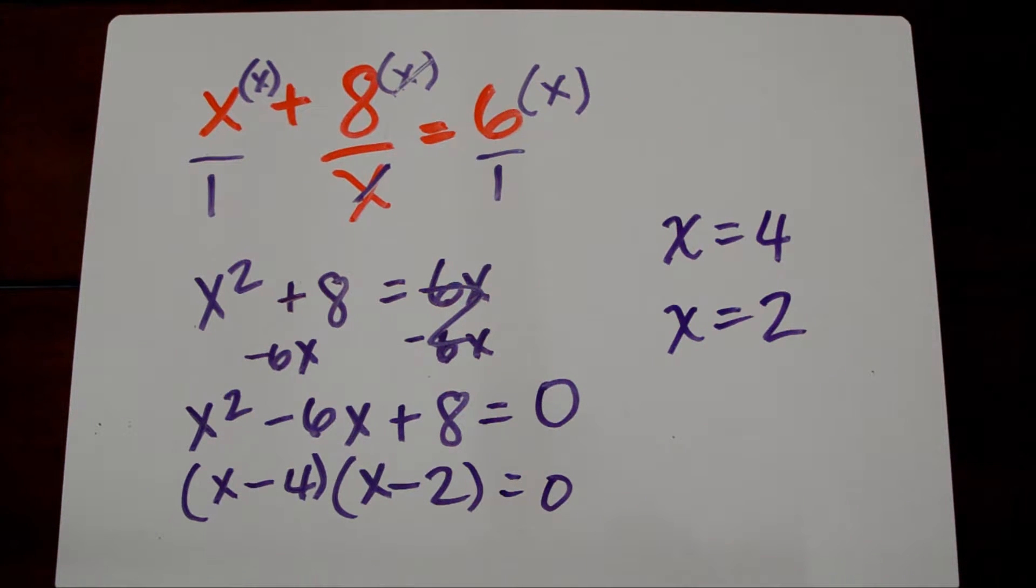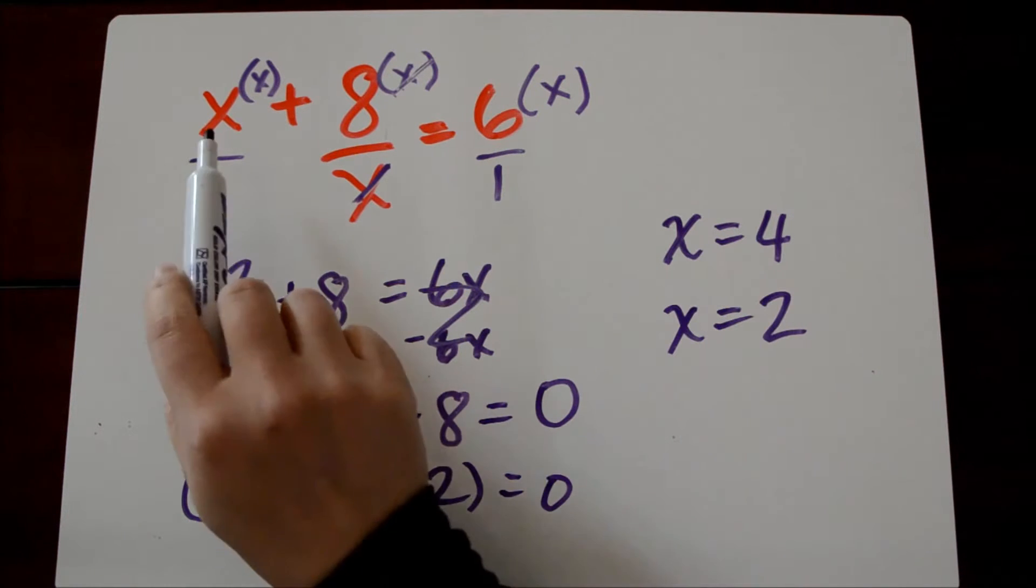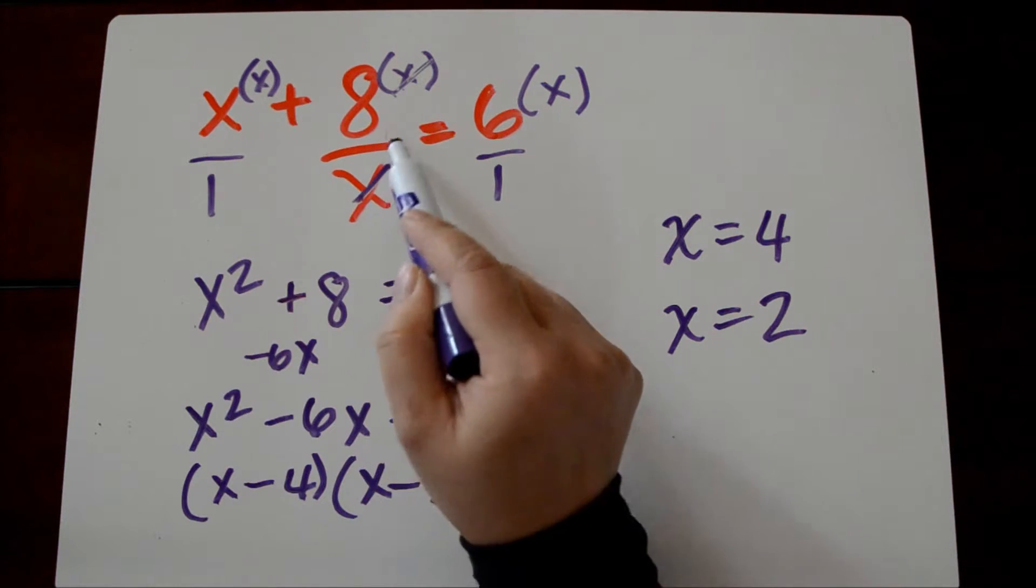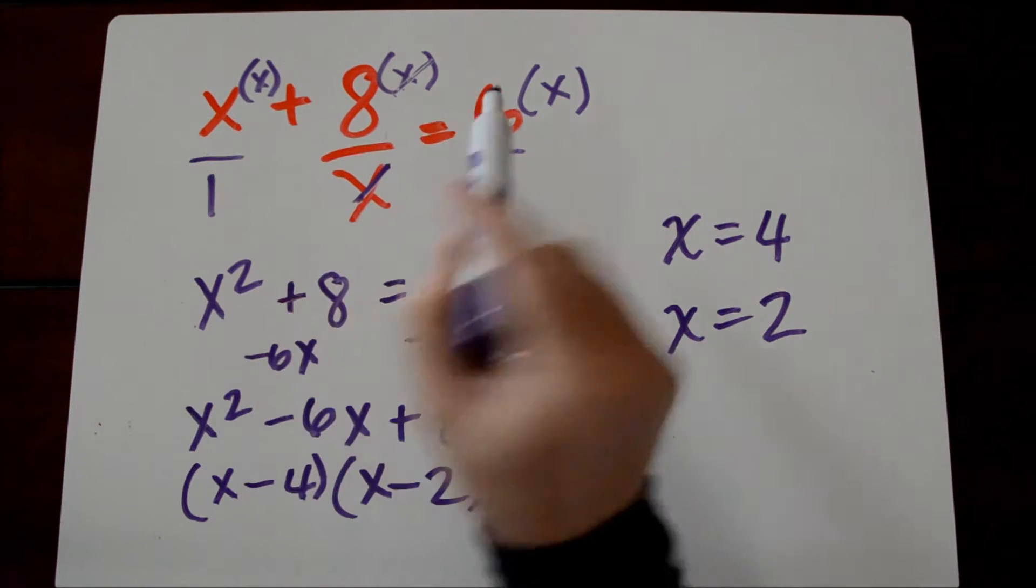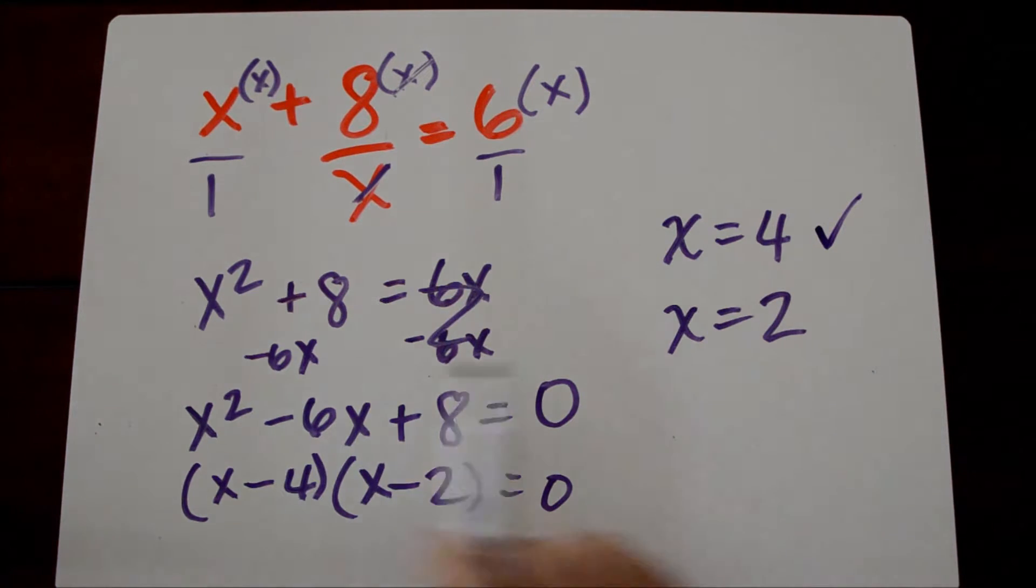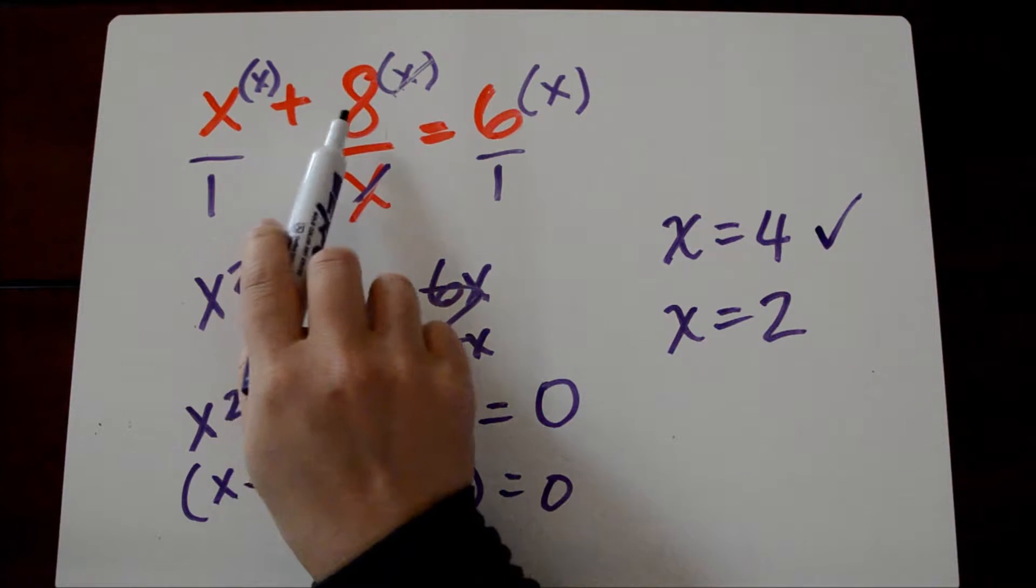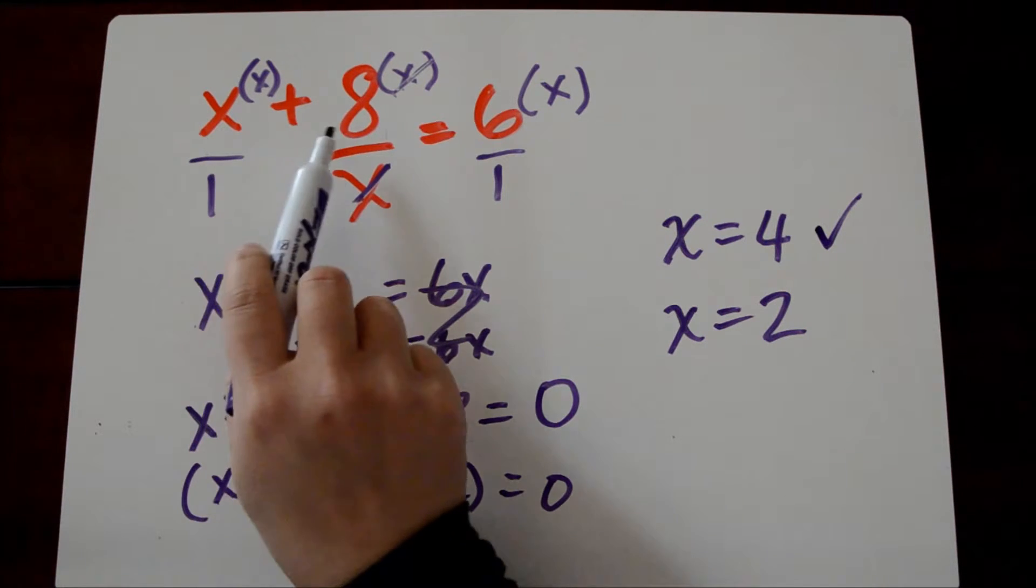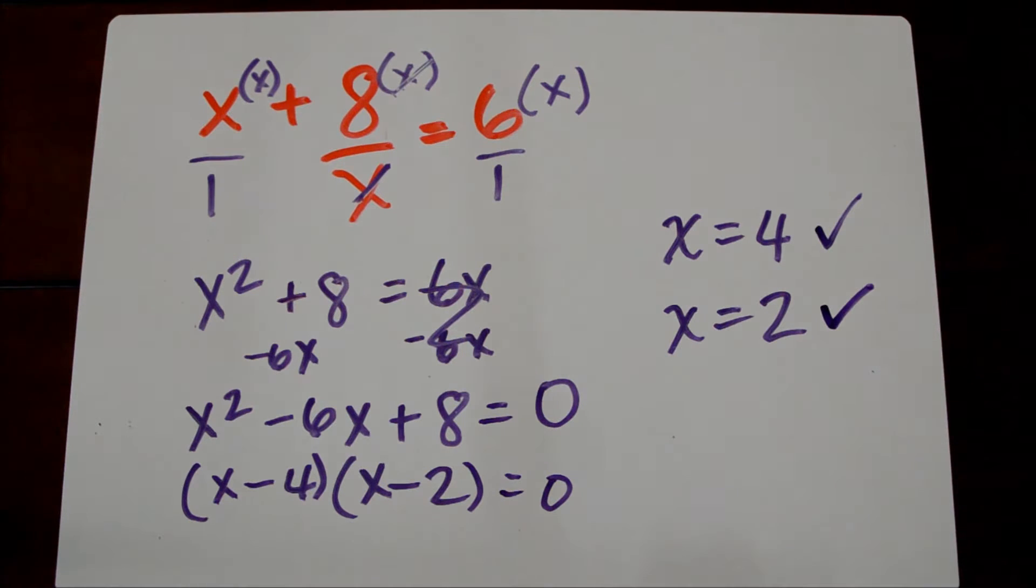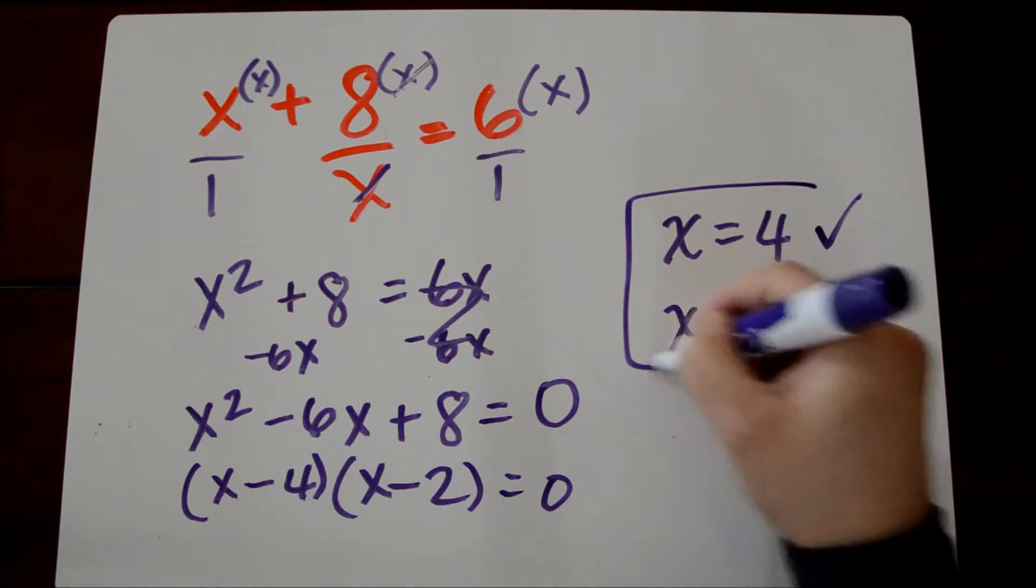So we always have to check with rational equations if our solutions do in fact work. So I have to plug it back in. Here when I plug 4 into x, you get 4 plus 8 divided by 4 is 2. So 4 plus 2 is 6. And then when you substitute in 2, you get 2 plus 8 divided by 2 is 4. And 2 plus 4 is indeed 6. So both of these solutions work. They are not extraneous solutions.